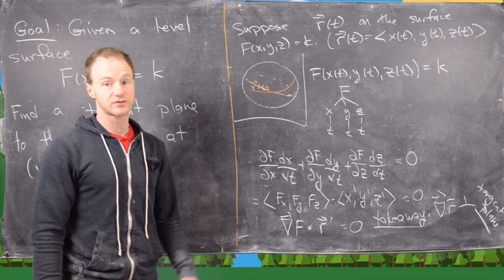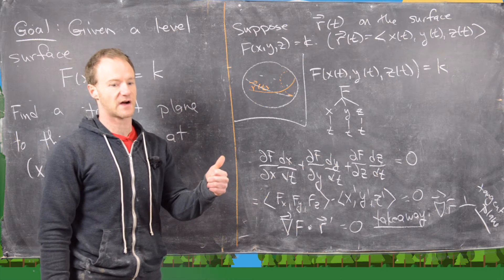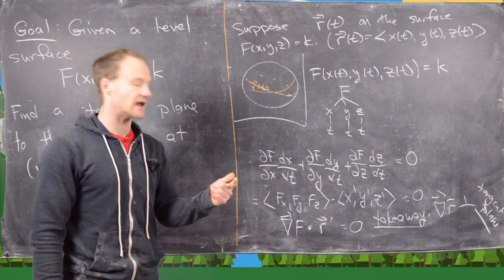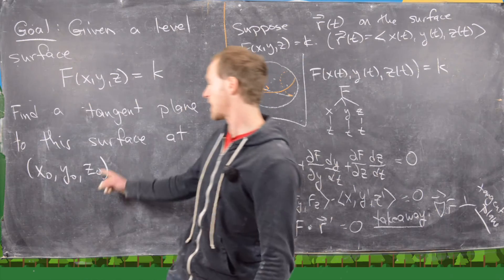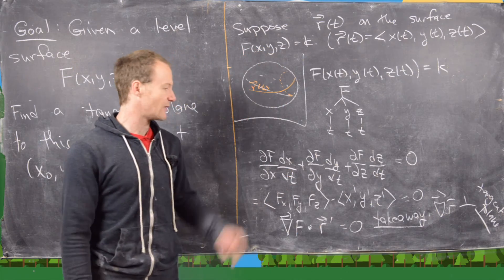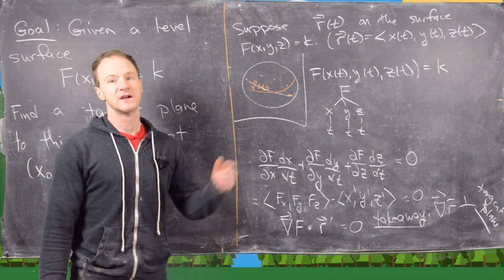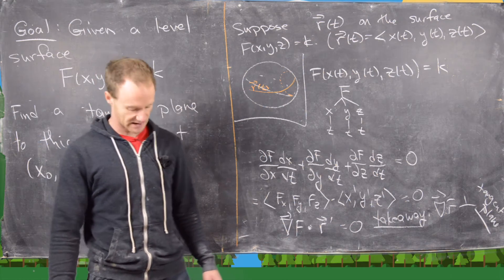And then let's recall that we need a normal vector to find an equation of a plane, and we also need a point on the plane. Well we have a point on the plane, now we have a normal vector on the plane. So I'll clean up the board, we'll write a summary, and we'll do some examples.